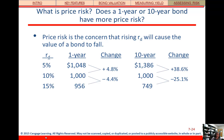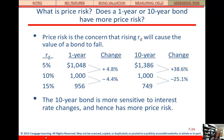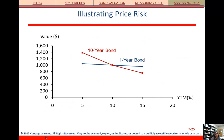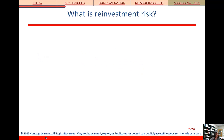Look at the impact of changes in yield on the one-year bond versus the 10-year bond. The changes are in double-digit numbers for the 10-year bond, that long-term bond, versus the one-year bond. So the 10-year bond has more price risk — it's more sensitive to interest rate changes. Looking at the chart, the price curve for the 10-year bond is much steeper than the one-year bond, which also indicates a higher level of price risk.